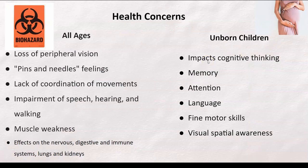So these are some health concerns for all ages: loss of peripheral vision, pins and needles feelings, lack of coordination of movements, impairment of speech, hearing, and walking, muscle weakness, effects on the nervous, digestive, and immune systems, lungs and kidneys. So people that are working in gold mines and people that don't have enough safety to protect them from the effects of mercury are exposed the most. Unborn children, it impacts cognitive thinking, memory, attention, language, fine motor skills, and visual spatial awareness. I'll be going back to the miners because we know that some people in the world are being exploited and they are affected by methylmercury. It's absolutely terrible.